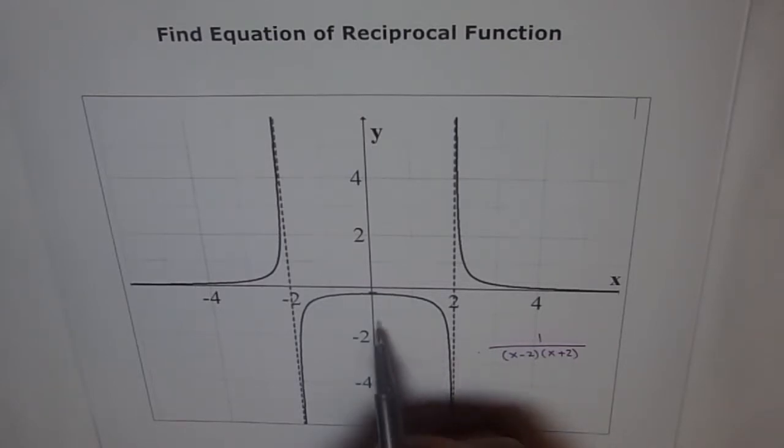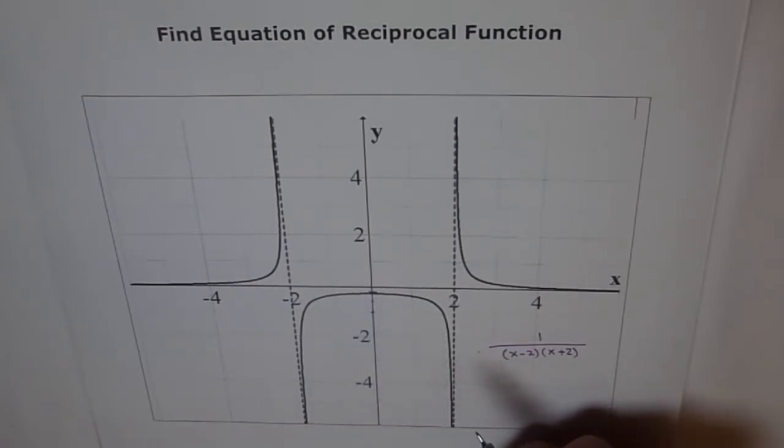So, at x equals to 0, the value which we have here is, it seems this is 1, and this is like half, so it seems to be one-fourth. So, what we expect is, at f of 0, we expect a value of minus 1 over 4.